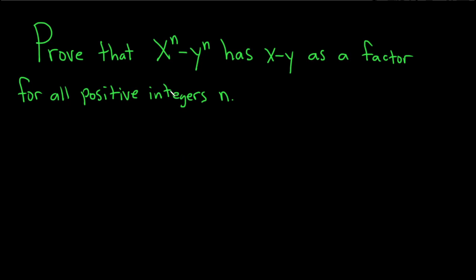In this problem, we're going to prove that x to the n minus y to the n has x minus y as a factor for all positive integers n.